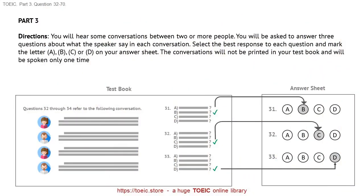Part 3. Directions: You will hear some conversations between two or more people. You will be asked to answer three questions about what the speakers say in each conversation. Select the best response to each question and mark the letter A, B, C, or D on your answer sheet. The conversations will not be printed in your test book and will be spoken only one time.